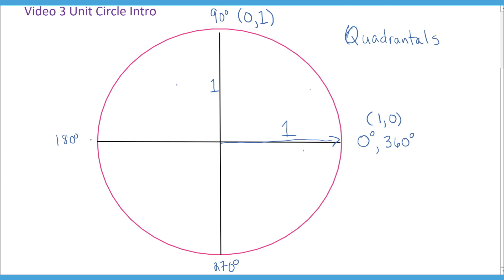When you go over to 180, you have to go left. So that's (-1, 0). And when you go down to 270, then that is (0, -1).